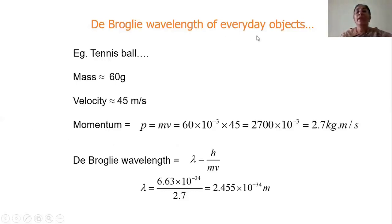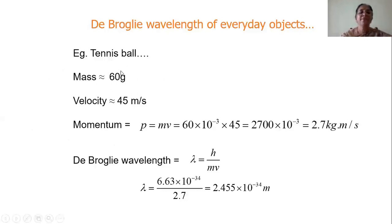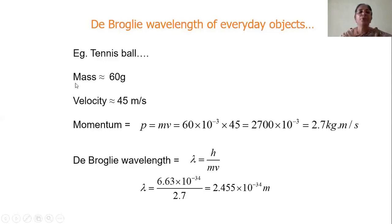Next, calculate the De Broglie wavelength of everyday objects. Consider a tennis ball: if the mass of the tennis ball is 60 grams and its velocity is 45 meter per second, what is its momentum? Momentum equals m into v. Mass is 60 grams, which equals 60 into 10 power minus 3 kilogram in SI units, times velocity 45 meter per second. De Broglie wavelength lambda equals h by mv. Substituting, look at the power — 10 power minus 34. The tennis ball is 60 grams — so huge — so the wavelength is so small.